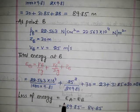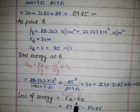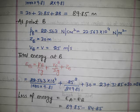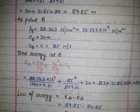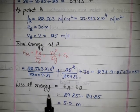We need to find the loss of energy. Loss of energy is the difference: total head at A minus total head at B. Total energy at A is 89.85 minus total energy at B, 84.85. So the loss of energy between points A and B is 5 meters.